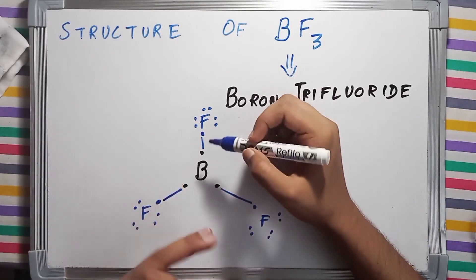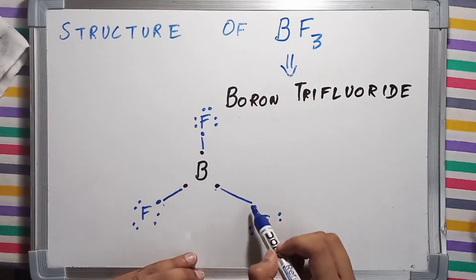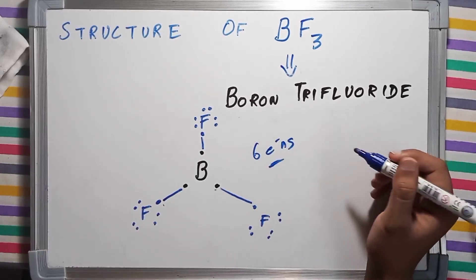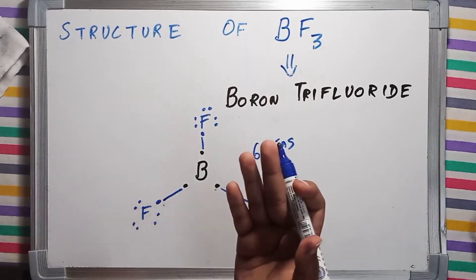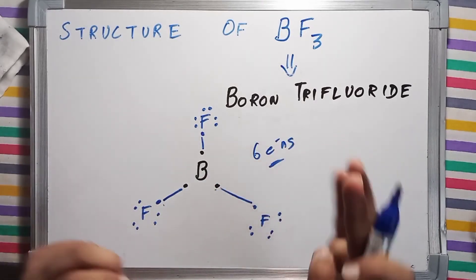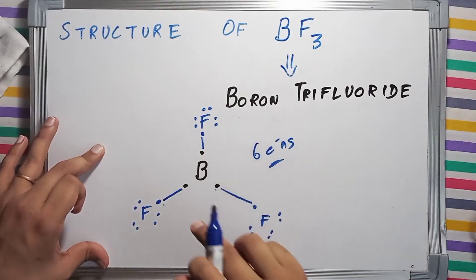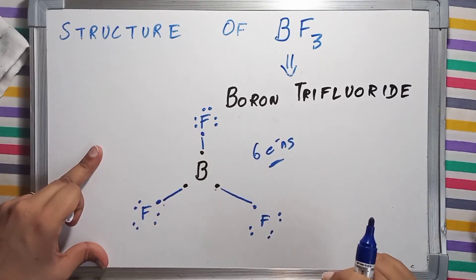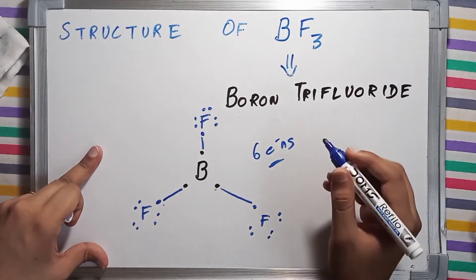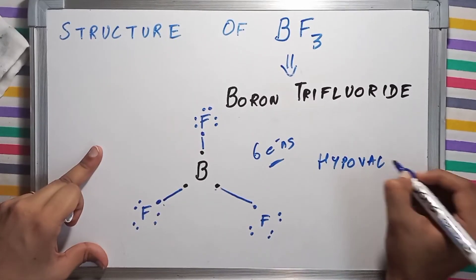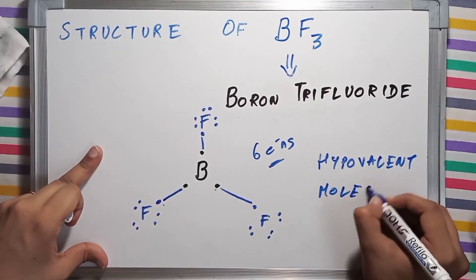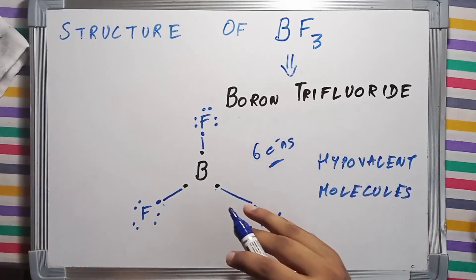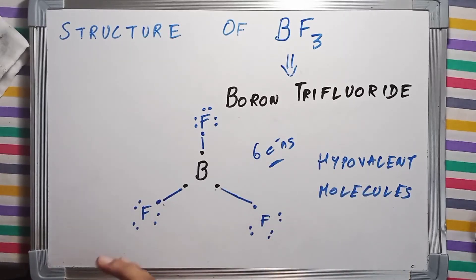Now let's count the valence electrons around boron — it has six electrons, not eight. According to Lewis's octet rule, every atom wants to complete its octet. Boron has not completed its octet, but this molecule does exist in fair quantity. This is an exception to the Lewis octet rule. Such molecules are known as hypovalent molecules — molecules in which the central atom has fewer than eight electrons in its valence shell after making bonds.